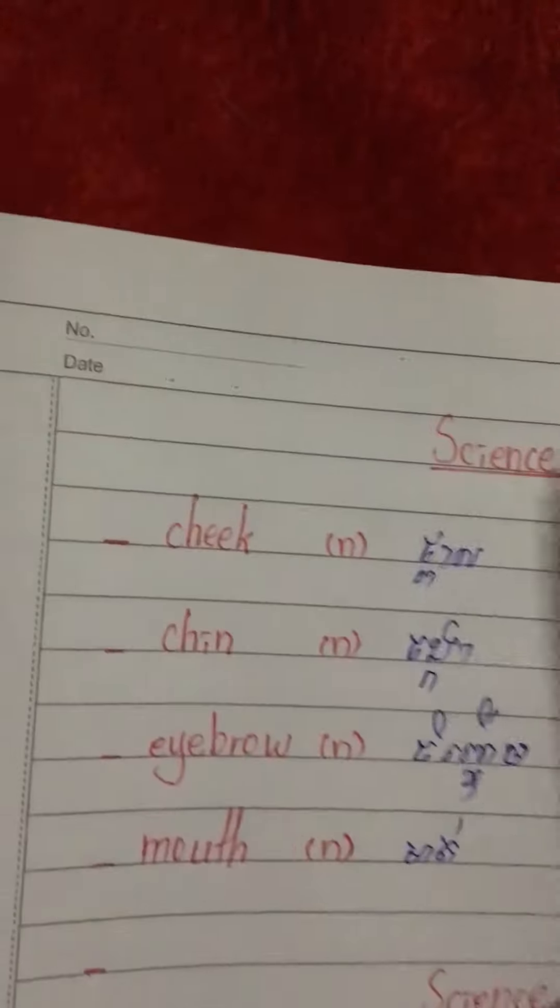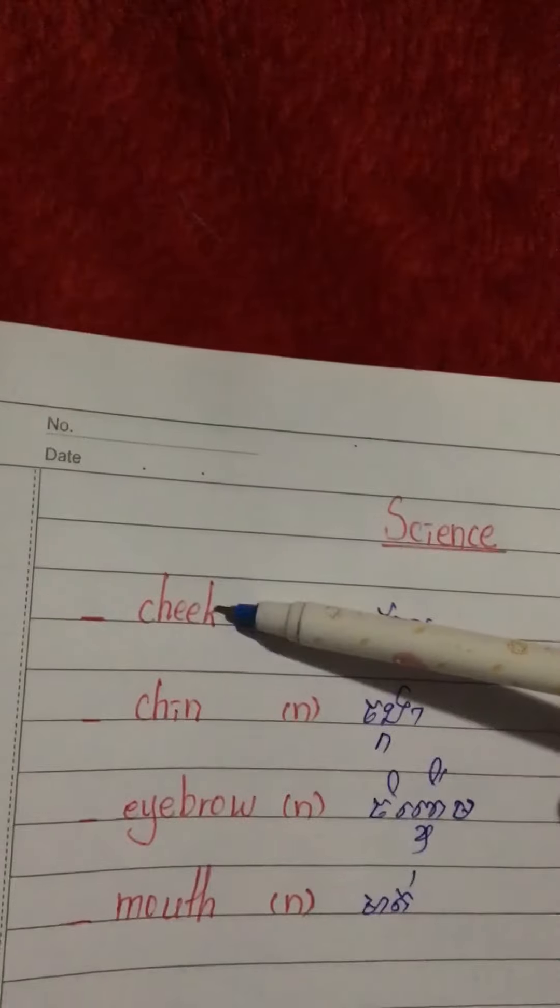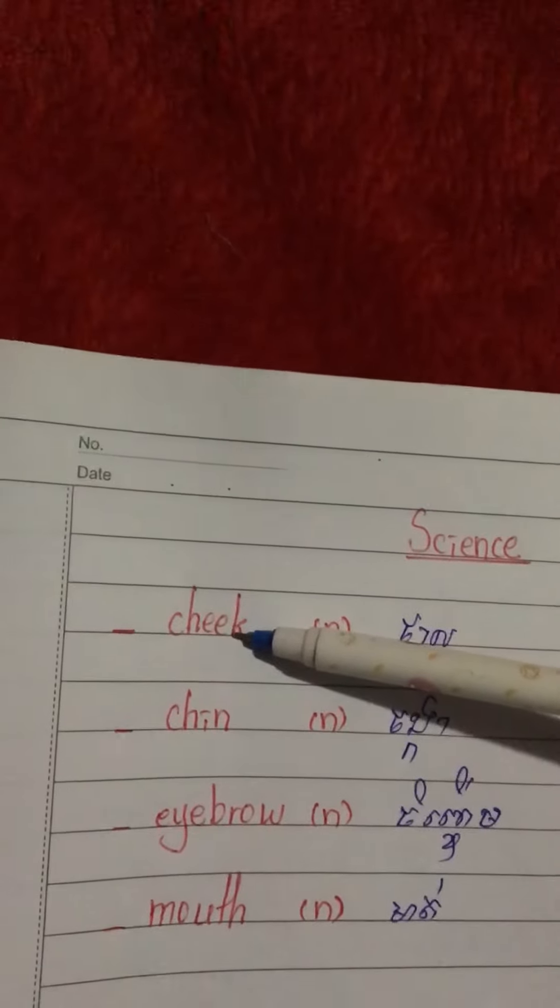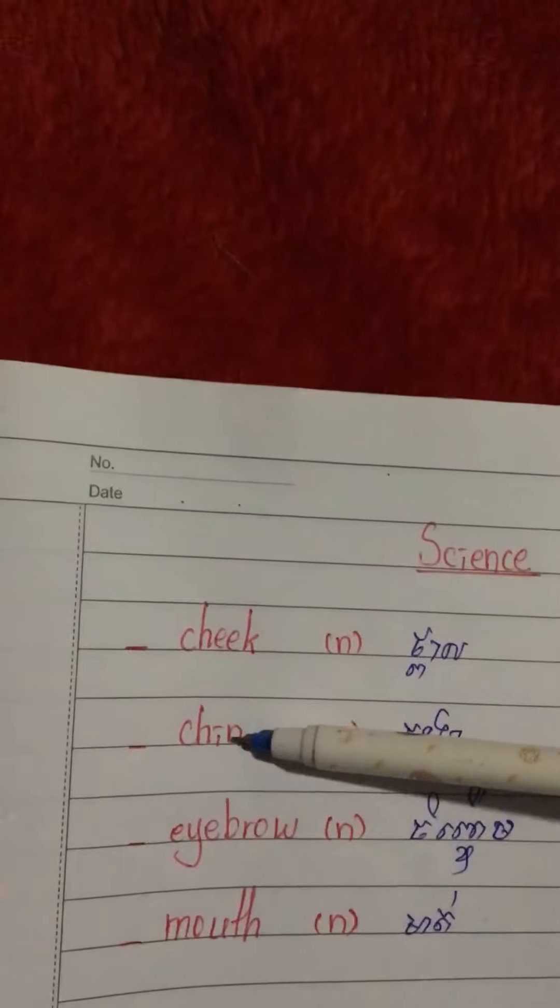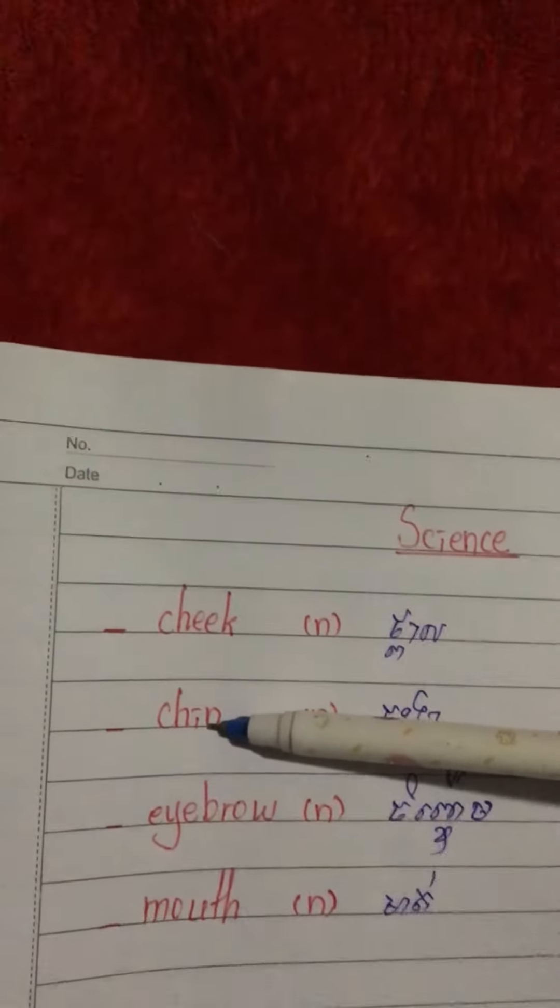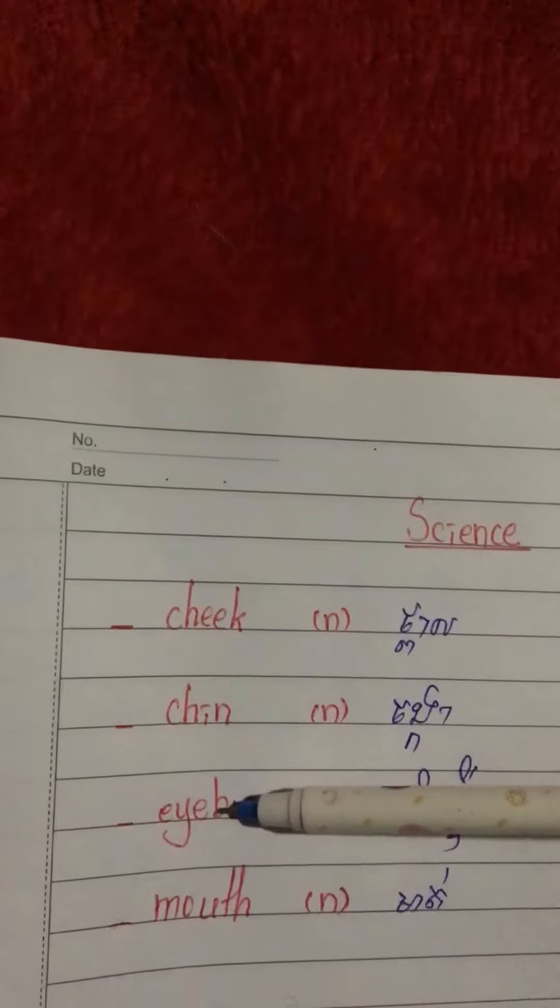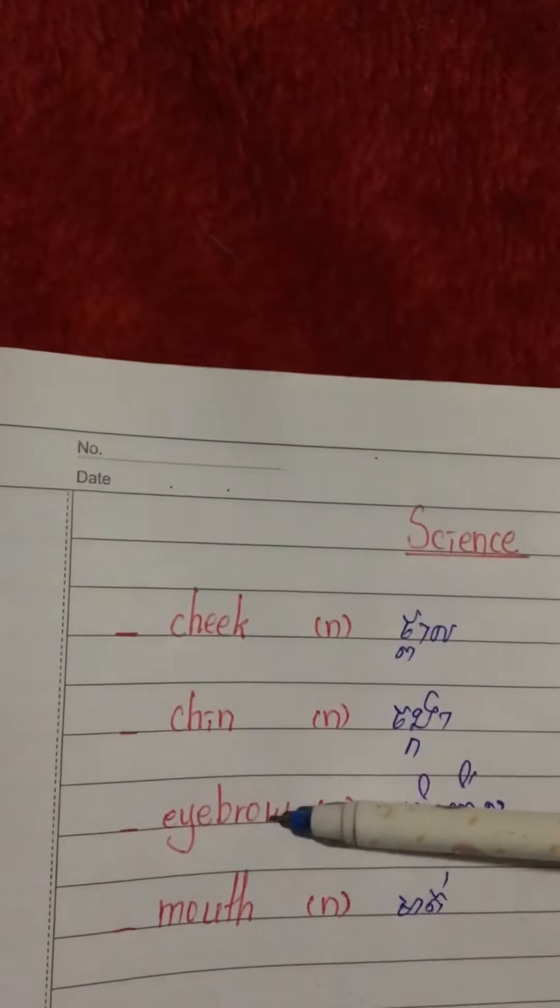Here are parts of the body too. The first word is cheek. Chin. Eyebrow. Mouth.